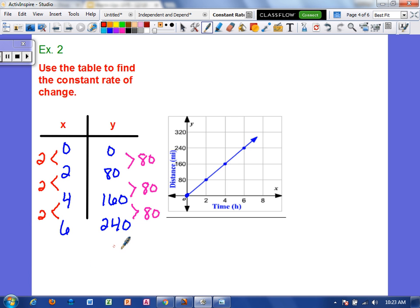So now to find the constant rate of change, I want to take the change in y and I want to divide that by the change in x. So since 80 is all we have to choose from, I'm going to do 80 and then let's say I picked this value here. So I would divide it by 2. And 80 divided by 2 is 40. So our constant rate of change for this relationship is 40.